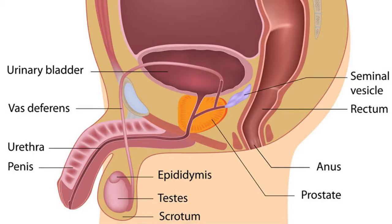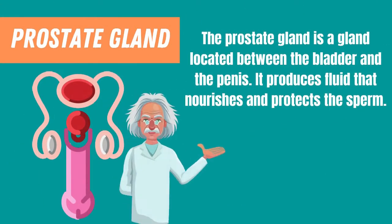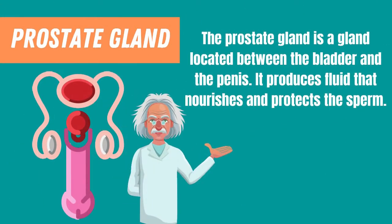The last part of the male reproductive system is the prostate gland. The prostate gland is a gland located between the bladder and the penis. It produces fluid that nourishes and protects the sperm.